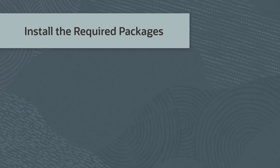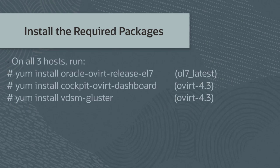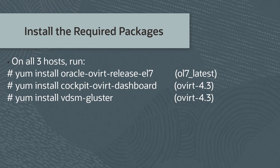Install the required software packages. On all three hosts, install the oracle-overt-release-el7 package. This package is provided by the ol7-latest YUM repository. Install the cockpit-overt-dashboard package, which provides a UI for the installation. And install the vdsm-gluster package, which is a plug-in to manage Gluster services.